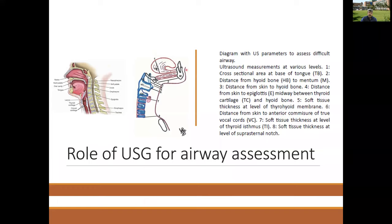Normal parameters assessable using ultrasound include the base of tongue, hyoid bone, distance from hyoid bone to skin, distance from skin to epiglottis, soft tissue thickness at the level of the thyrohyoid membrane, distance from skin to the commissure of the true vocal cords, soft tissue levels at the thyroid isthmus, and soft tissue at the level of the suprasternal notch.